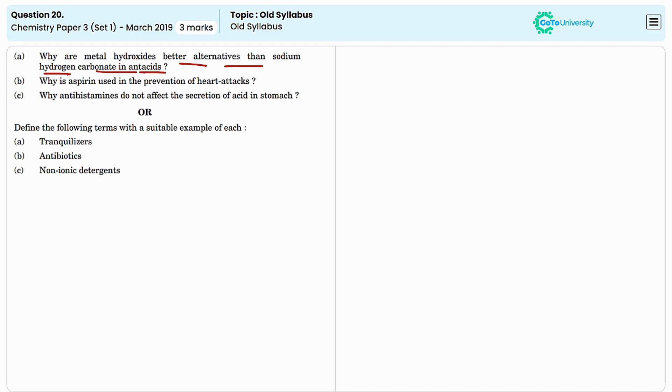Metal hydroxides are better alternatives to sodium hydrogen carbonate because they neutralize the stomach acid without producing excess carbon dioxide gas. They provide longer lasting relief and do not cause rapid changes in pH which may lead to acid rebound.